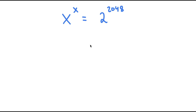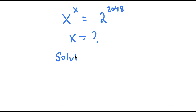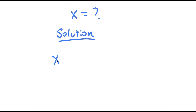So in this problem, I have x to the power of x is equal to 2 to the power of 2048. To solve this problem, I obviously want to find the value of x. So for my solution, I'll start with x to the power of x is equal to 2 to the power of 2048.